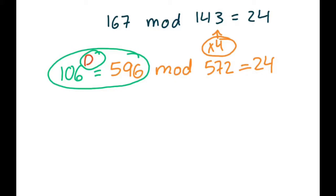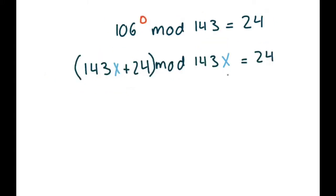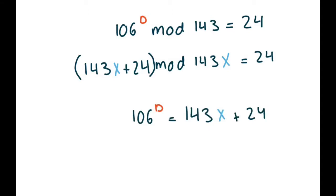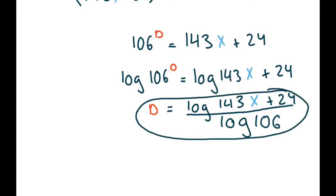We can actually figure out how many times you'd have to do this by calling this increasing integer x and isolating it. What we were doing before was multiplying 143 by some increasing integer x, adding 24 to 143x, and putting that value in the place of 106 to the d power — saying this is a modular relationship that gives the secret message 24 as an answer. Because we're putting 143x plus 24 in place of 106 to the d power, we can set these equal to each other. When we solved for d earlier we got d = log(167) / log(106), a decimal, but with x involved we get d = log(143x + 24) / log(106).